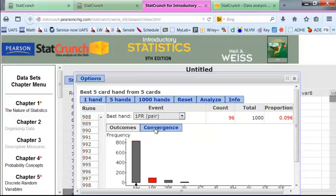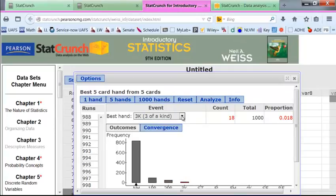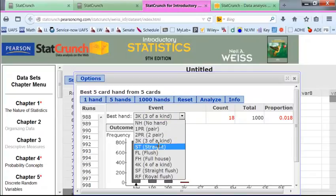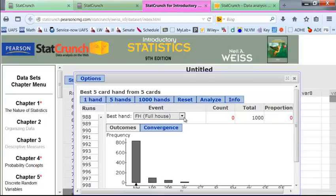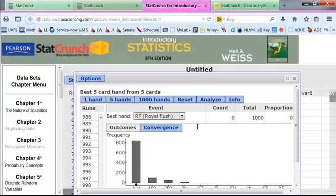If we look at one pair, that happened 96 times. Two pair, 49 times. Three of a kind, 18 times. Straight, twice. Once for a flush. No full houses this time. Out of this thousand. No four of a kinds. No straight flushes. No royal flushes. Okay, we could draw another thousand.